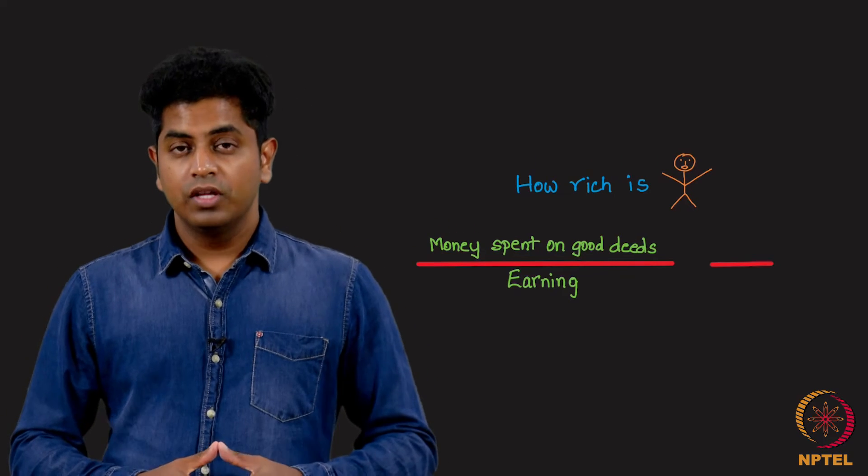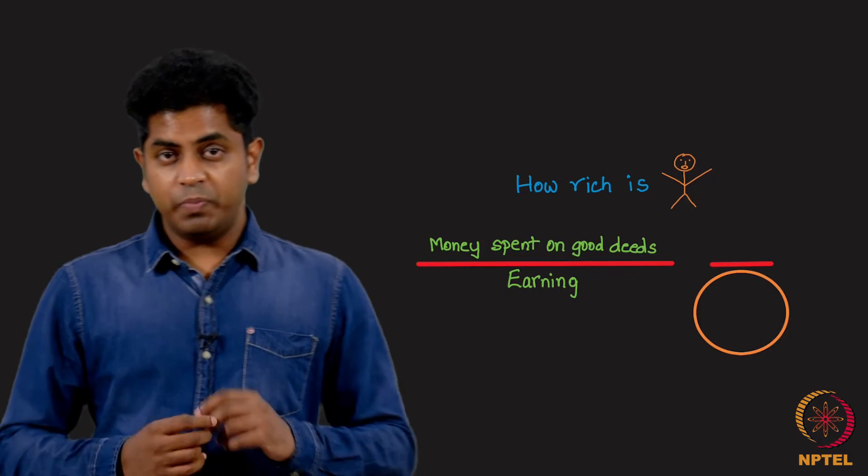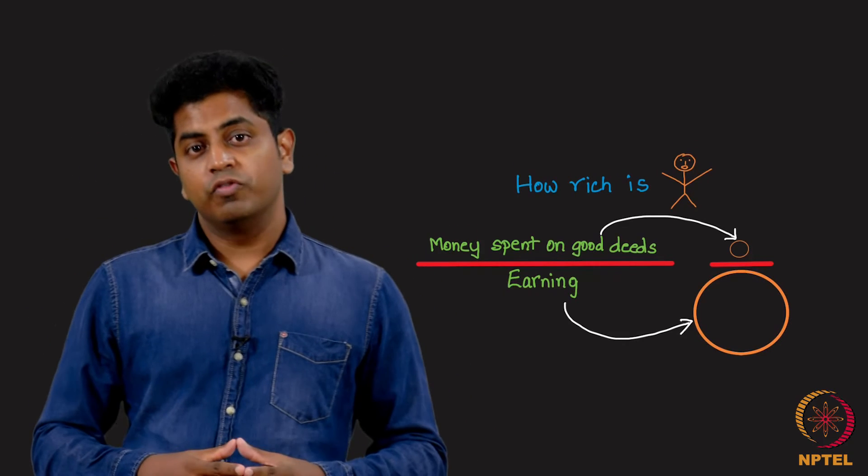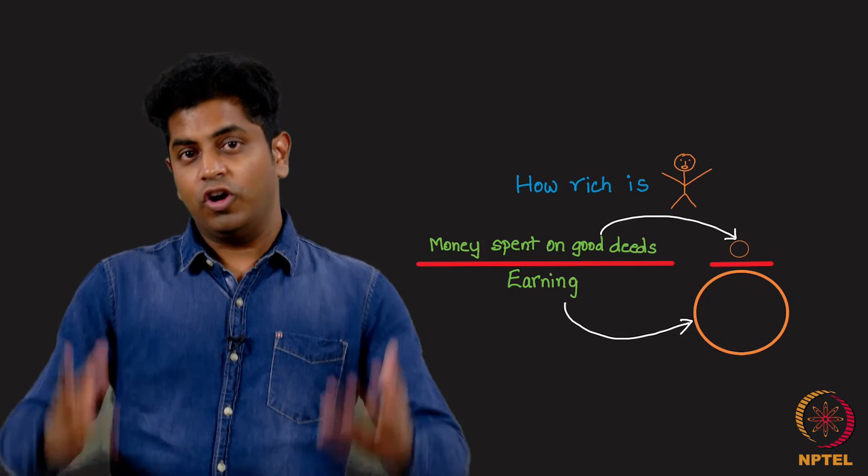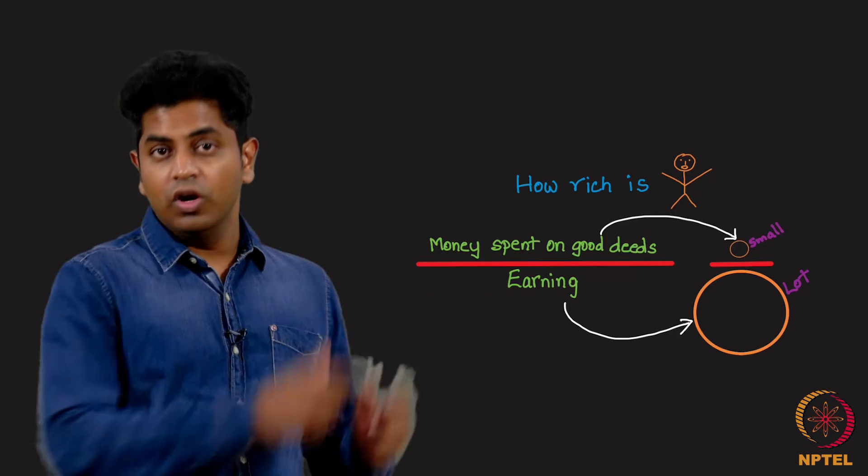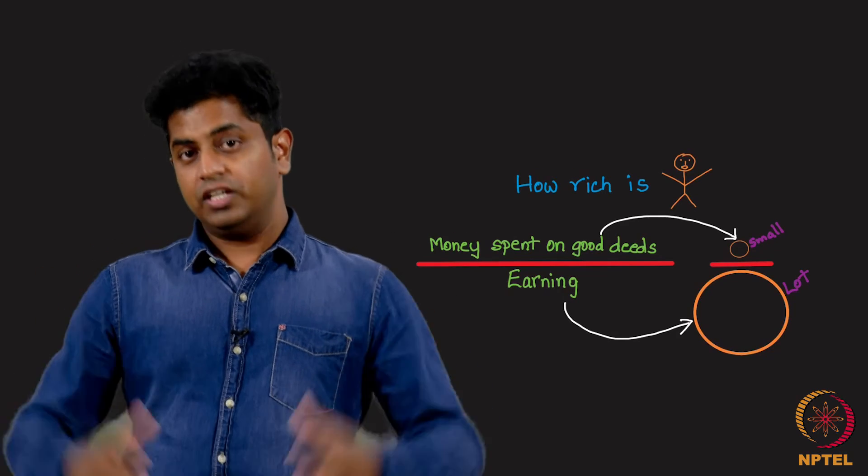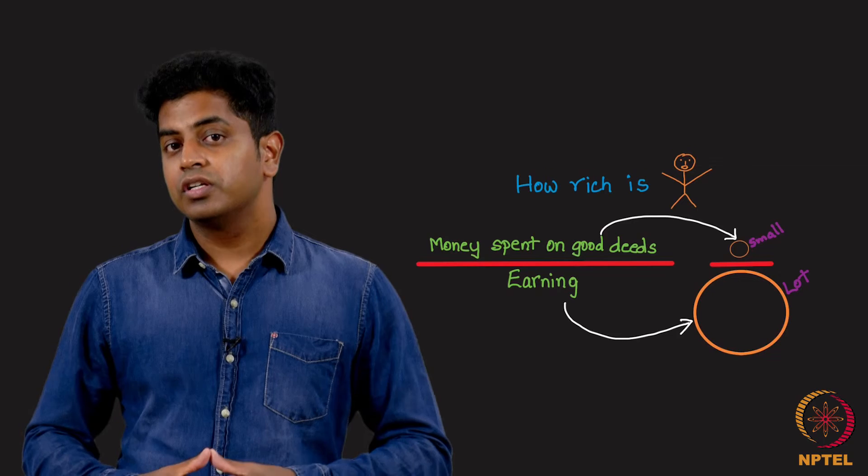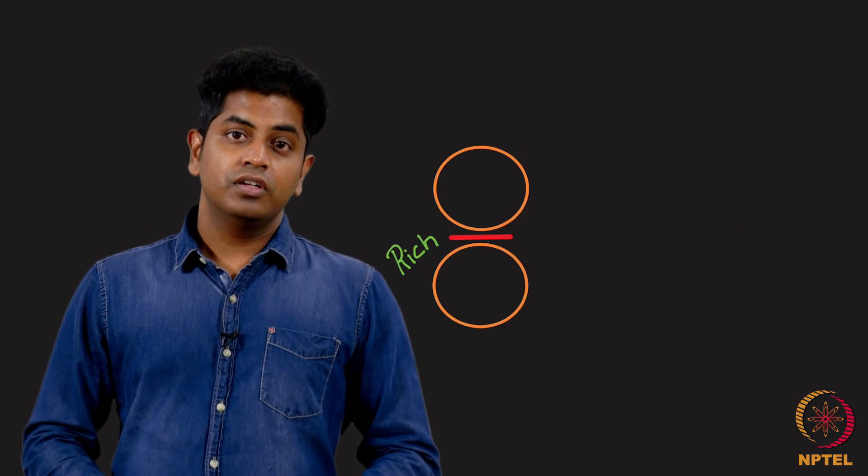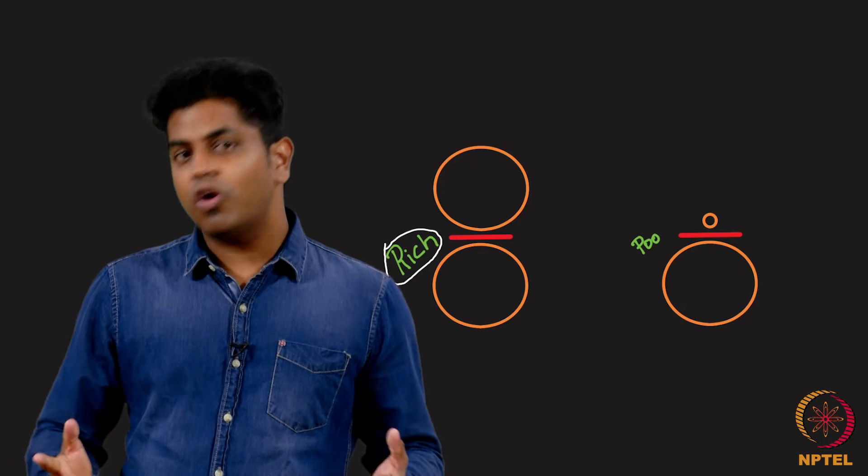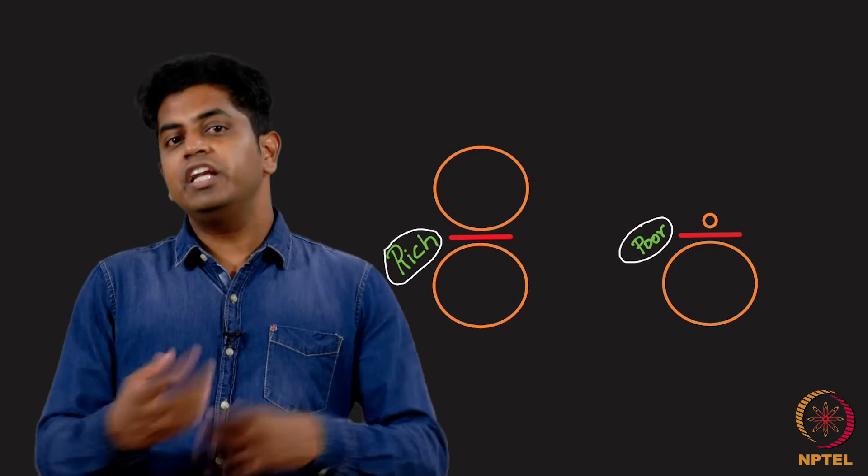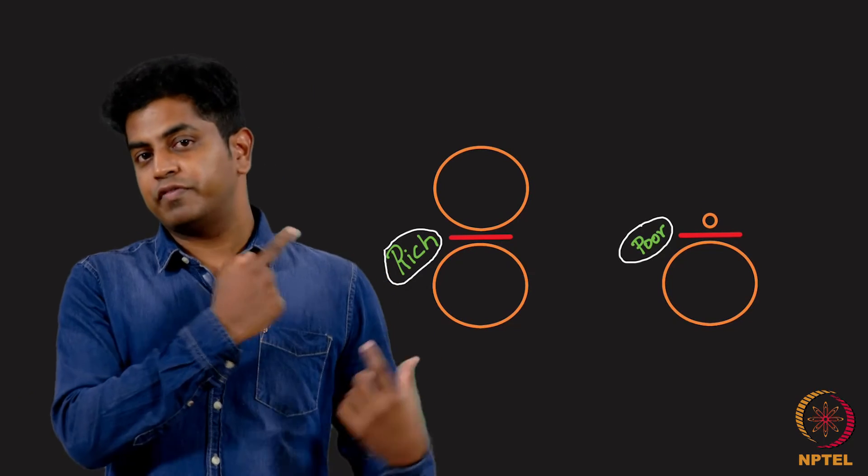Why do I use this fraction? That is because you earn a lot, you spend a small chunk a worthy way - I do not call you rich. Whatever you earn, you spend a good chunk of it for a worthy cause, then I call you rich. If this fraction is close to 1, you are very rich. If this fraction is close to 0, you are not very rich. So I am redefining richness with the help of this fraction.